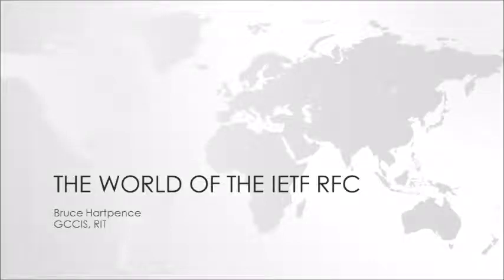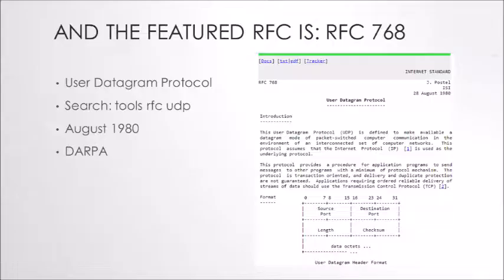Hey friends and neighbors, time now for another exciting episode of the World of the IETF RFC. This week the featured RFC is RFC 768, the User Datagram Protocol, which comes to us from August 1980.